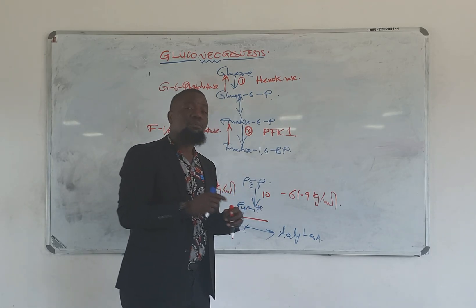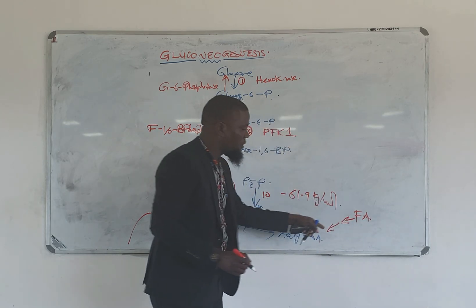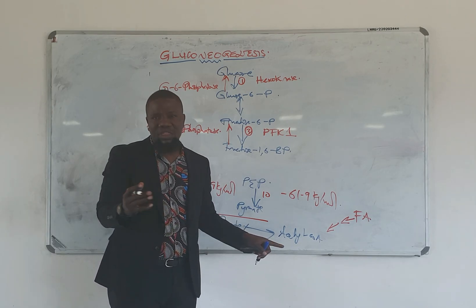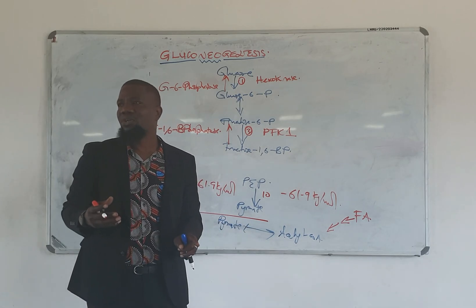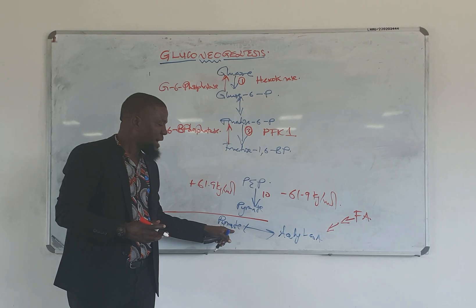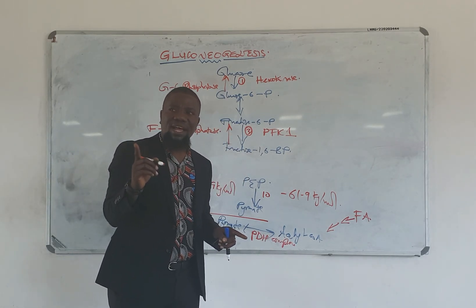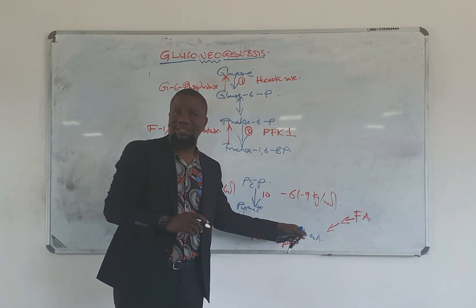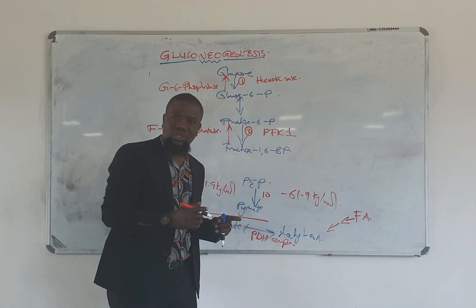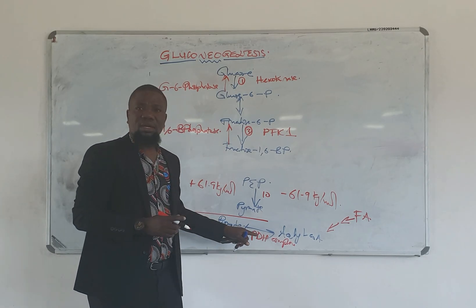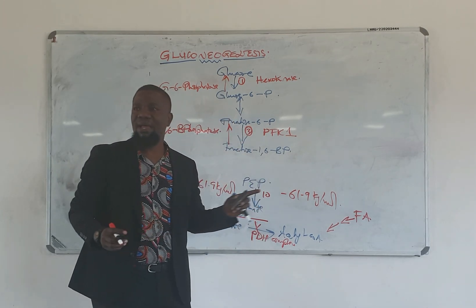From lipolysis and beta-oxidation, you will produce high amounts of acetyl-CoA. The enzyme that converts pyruvate into acetyl-CoA — the pyruvate dehydrogenase complex — is allosterically inhibited by acetyl-CoA itself. So in gluconeogenic circumstances, this reaction is going to be highly inhibited because of the high amounts of acetyl-CoA coming from beta-oxidation.